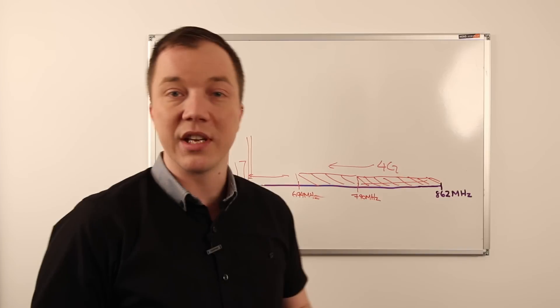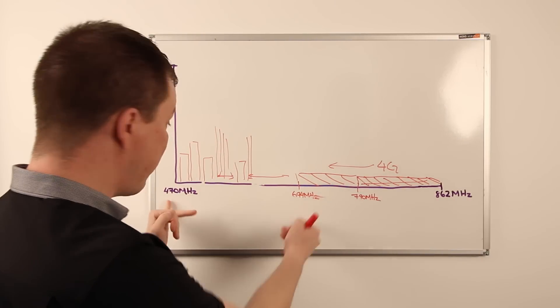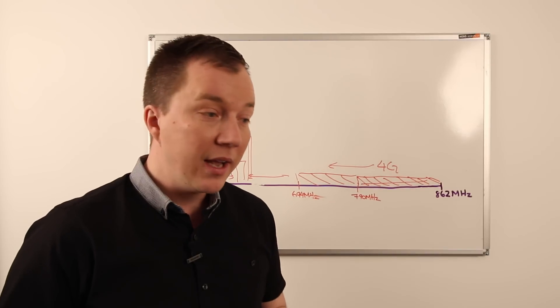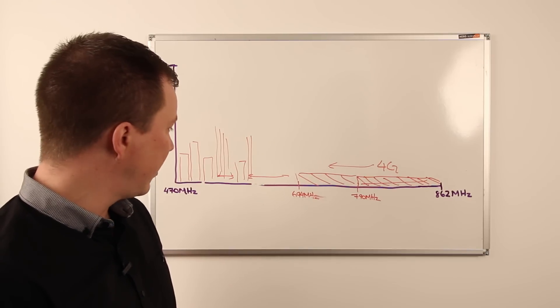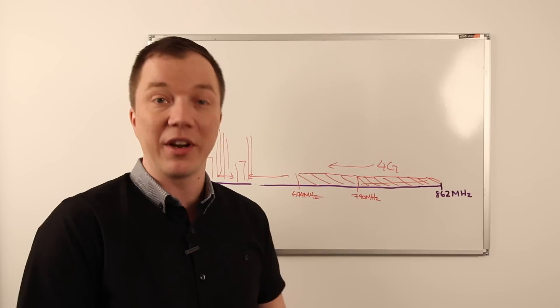And starting possibly as early as 2019, we're going to be left with only about 200 megahertz of spectrum. And this, I think, is critical for all of us to understand. It will make operating radio microphones more difficult.